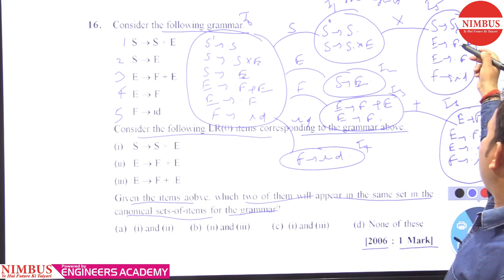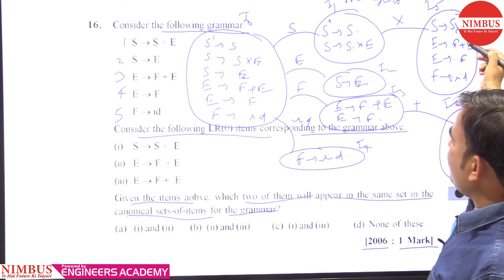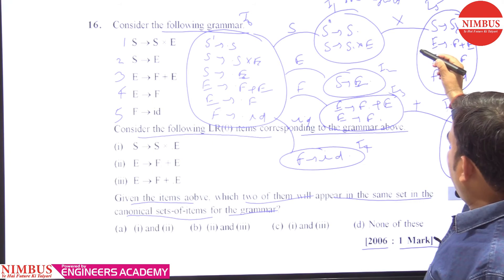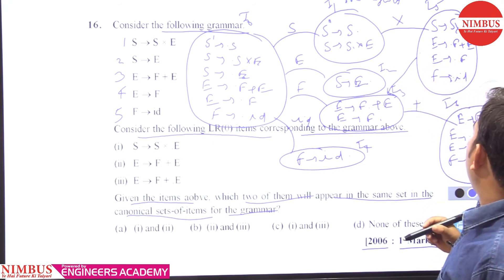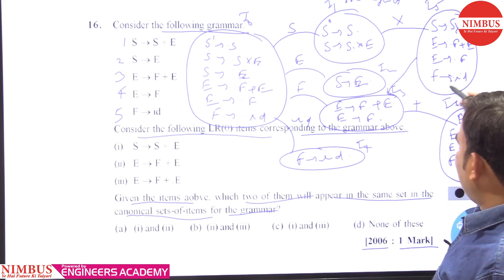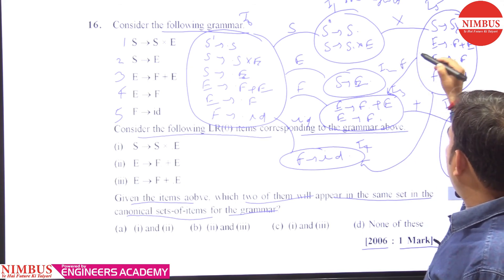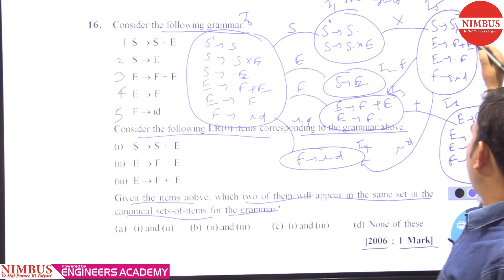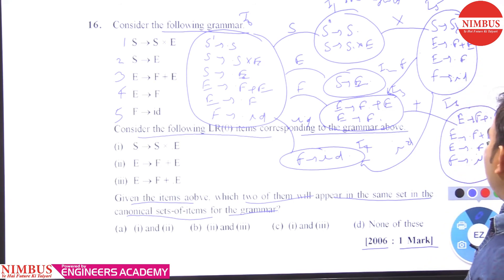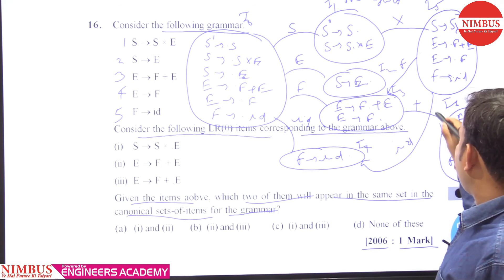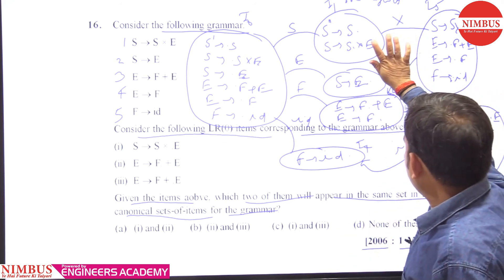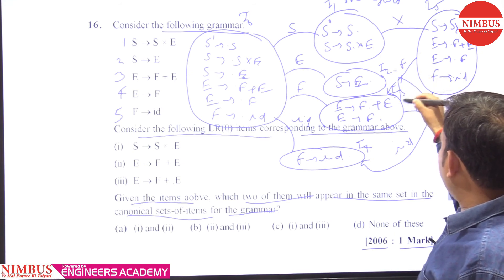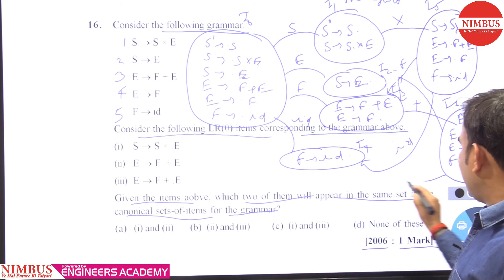When we give F on I6, we reach I3 state. When we give ID on I6, we reach I4. When we give F on I5, we reach I3. When we give ID on I5, we reach I4. This completes the full canonical set of items.